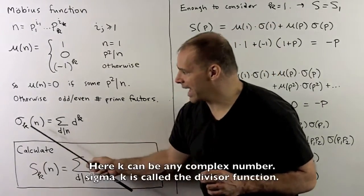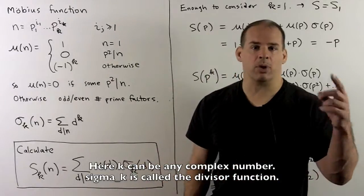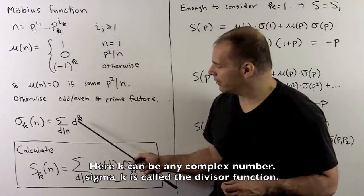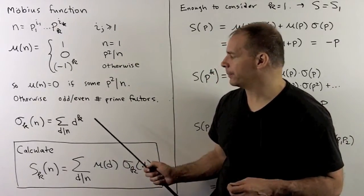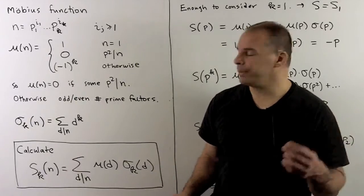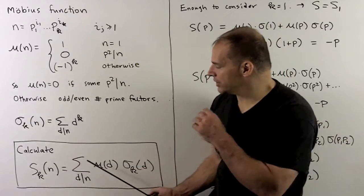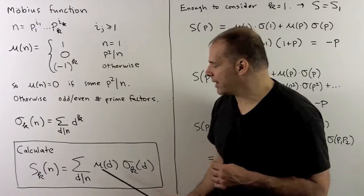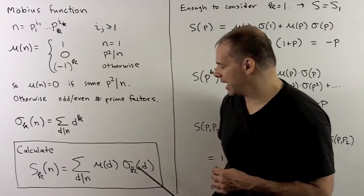Next, we define sigma sub k of n as the sum over the divisors of n of d to the k. We want to calculate S sub k of n, where this is defined as the sum over the divisors of n of mu of d sigma sub k of d.